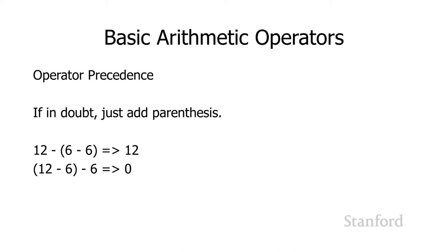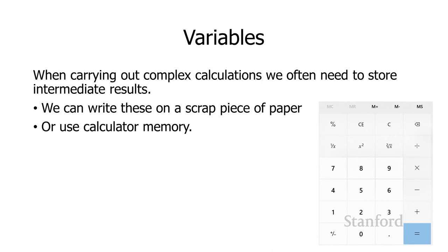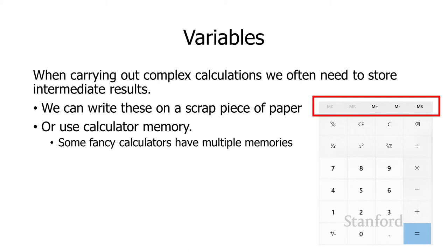One thing that happens when we're starting to carry out complex calculations is sometimes we'll want to store intermediate results. If I'm trying to carry out these operations in my head, I may just write some intermediate results on a piece of paper. If we're working with a calculator, fancier calculators actually have calculator memory, and super fancy calculators have multiple memories. I can say, here's an intermediate result, I want to store that in memory one. Here's an intermediate result, I want to store that in memory two. Let me recall what's in memory one. Let me recall what's in memory two.